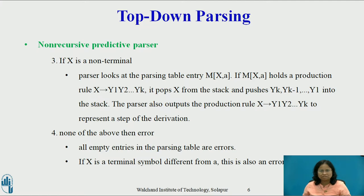Third, if X is a non-terminal, the program considers the parsing table entry M[X, a]. If X derives Y1, Y2, ..., Yk, it pops X from the stack and pushes Yk, Yk-1, and so on up to Y1 onto the stack. The parser also outputs the production rule X → Y1 Y2 ... Yk to represent a step of the derivation. Fourth, if none of the above, then error. All empty entries in the parsing table are errors and the parser calls an error recovery routine. If X is a terminal symbol different from a, that is also an error case.